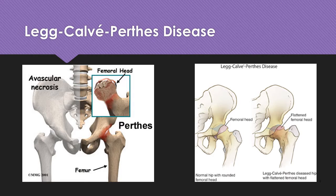In 10% of cases, there is bilateral hip involvement. In most cases, there is a delayed bone age. The cause of the necrosis is related to disturbed circulation to the femoral head with ischemic aseptic necrosis.